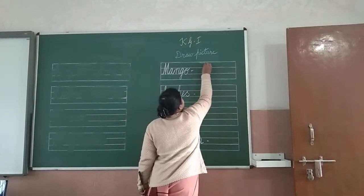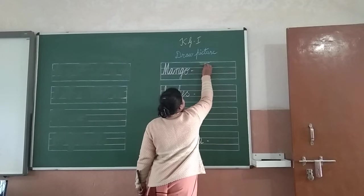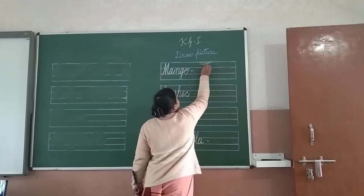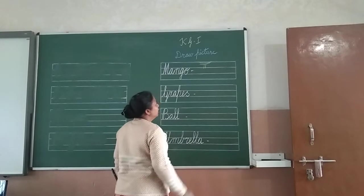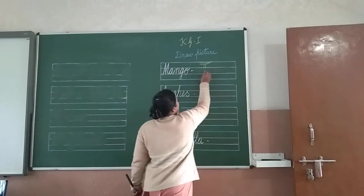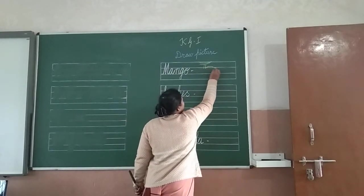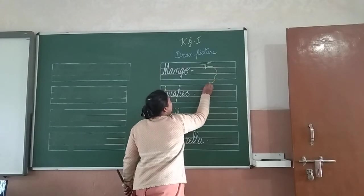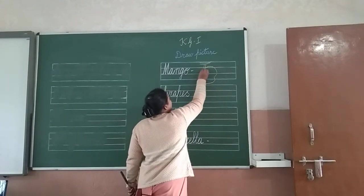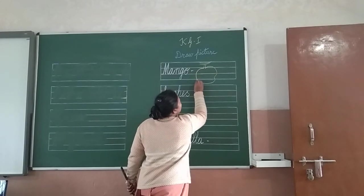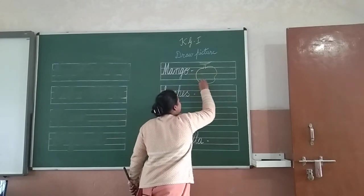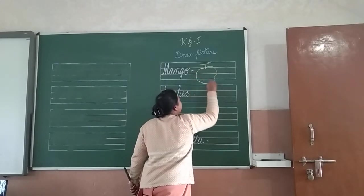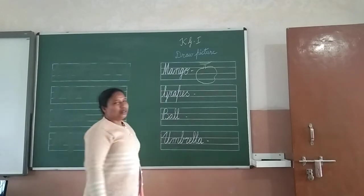So here we will do like this. Then go like this. Two lines. And then you do it like this, and like this. You come, and then this also you come and join with this. Okay? This is mango.